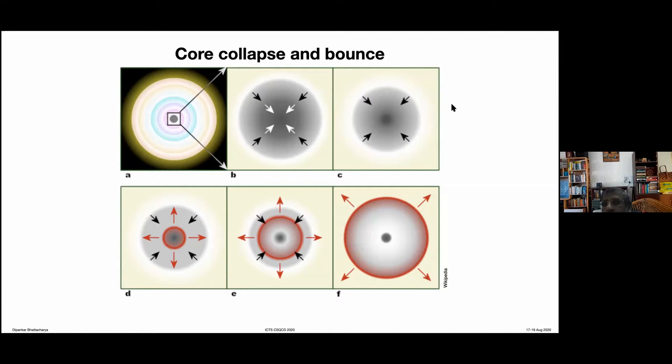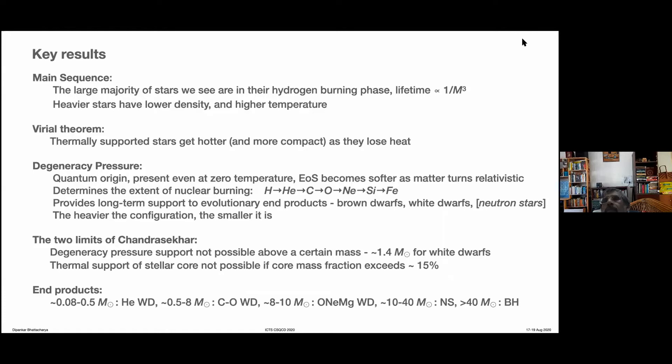Before we go forward, let's pause for a moment and take a recap of what are the essential things we have learnt. We have learnt that the large majority of stars we see are in their hydrogen burning phase because that is the phase of life which is longest lasting. And the hydrogen burning lifetime is proportional to one over the cube of mass. So the heavier the mass of the star, the shorter is the lifetime.